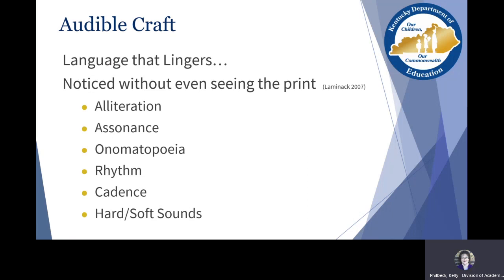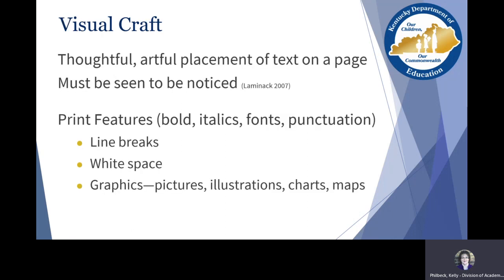Audible craft is just what you'd think — it's that language that lingers, what you hear. Audible craft can be noticed without even seeing the print. When we think about audible craft, you think about alliteration, assonance, onomatopoeia, rhythm, cadence, and hard and soft sounds. That language and how it sounds to the reader are intentional choices the writer makes that play into creating the text as a whole.